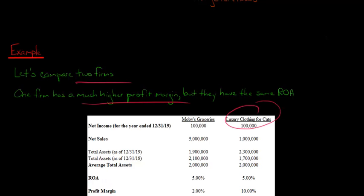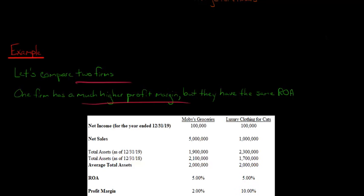For Luxury Clothing for Cats, it's different. The profit margin is five times higher than it was for the grocery store — Luxury Clothing for Cats has a 10% profit margin. So every dollar in sales, 10 cents becomes profit. Much higher profit margin for the Luxury Clothing for Cats company.